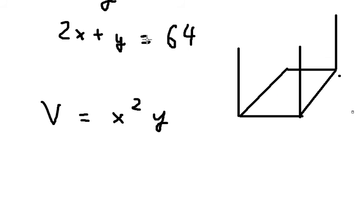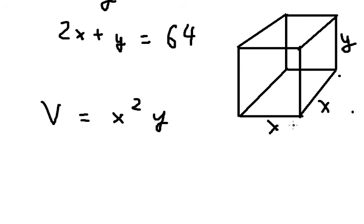So here is the box, we just consider like this. The base is the square and the height is y. If we want to find the volume, we need to multiply x times x times y. Because we have 2x, that's why we have x squared.